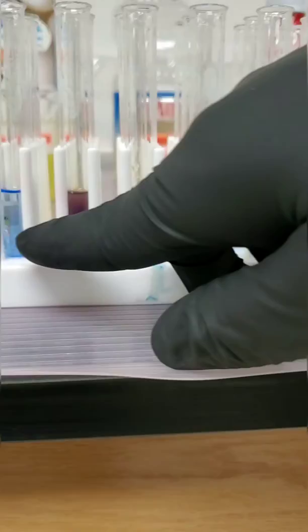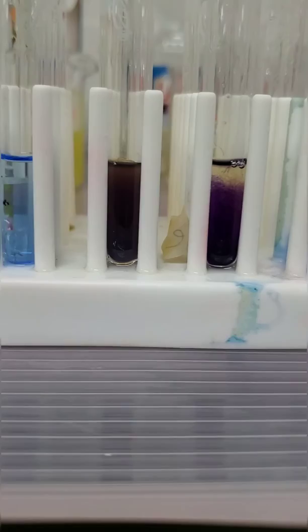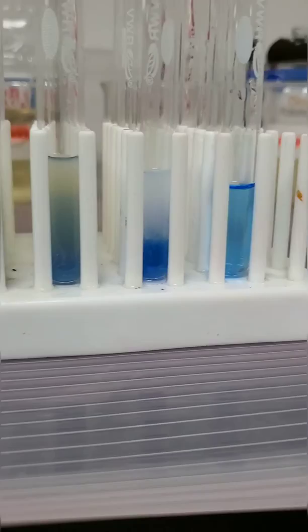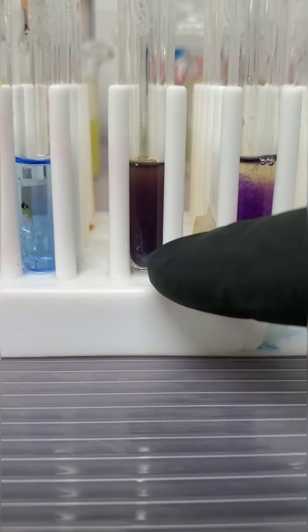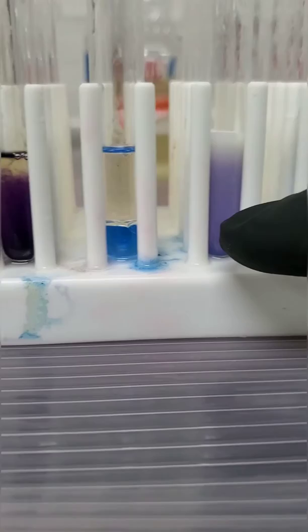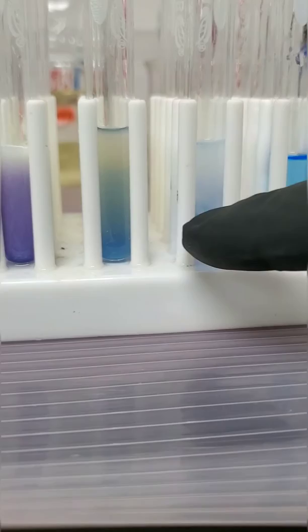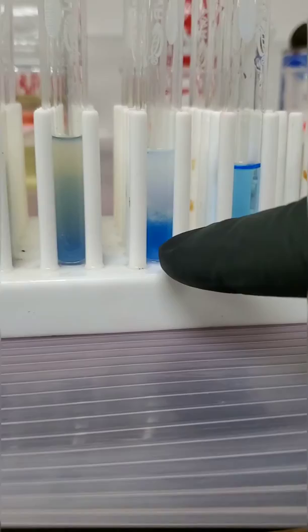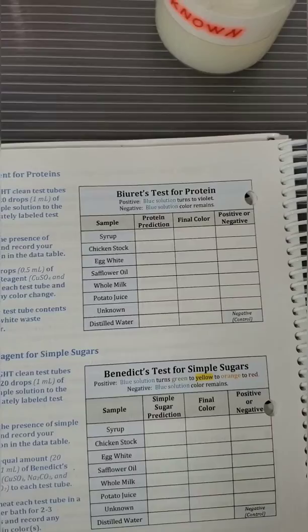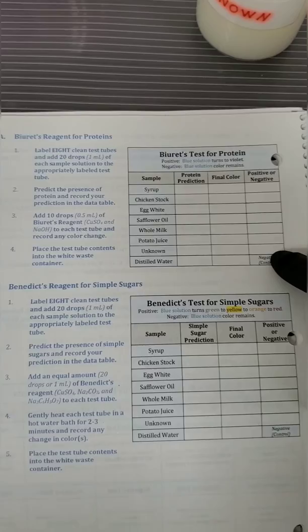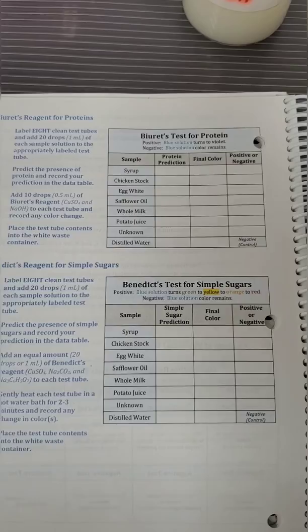A negative will stay blue, and notice that's what it's doing over here for our water. So here's a negative. Slowly look across and see which ones show any sign of purple. Keep in mind, not all are going to be exact because not all have a clear starting solution. So, again, one more time. Here's syrup. Here's chicken stock. Here's egg white. Safflower oil. Notice it separates. Here we have milk, potato juice, our unknown, and distilled water. So the most important thing is notice the unknown staying mostly blue. So record those now. All right, so based on our final colors, you should know positive or negative by now. Obviously, the distilled water is a negative. Definitely the unknown is what we worried about most, and it was also a negative.